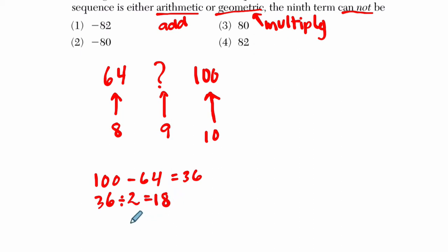So one possibility, if we add 18 each time, that would mean our sequence would be 64 plus 18 is 82. And then plus 18 is 100, so it could be 82. But we're trying to find what it can't be, so let's cross off 82.